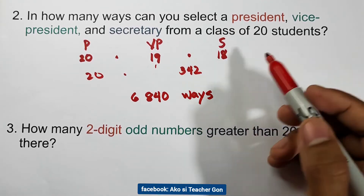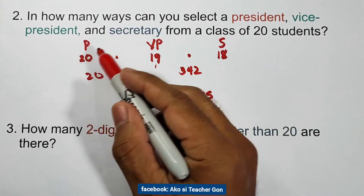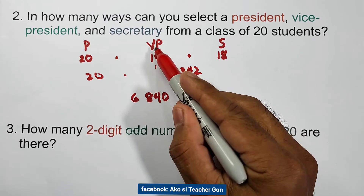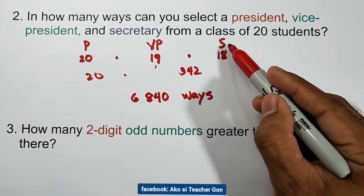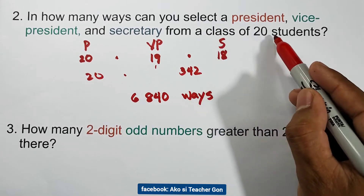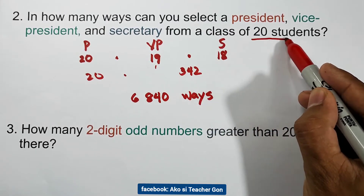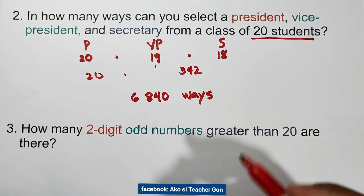So there are 6,840 ways to select a president, vice president, and secretary from a class of 20 students.